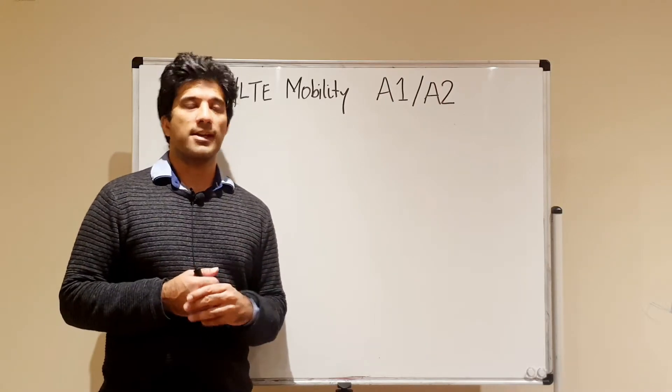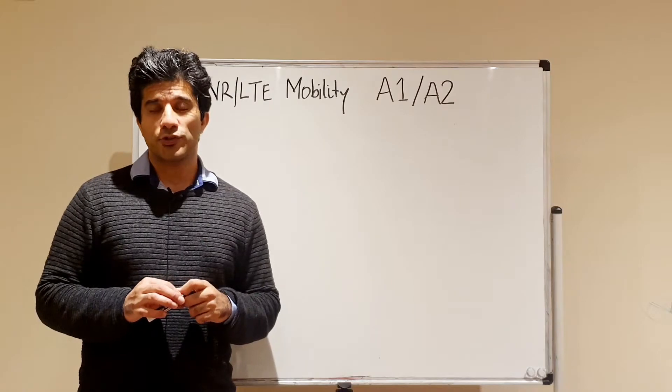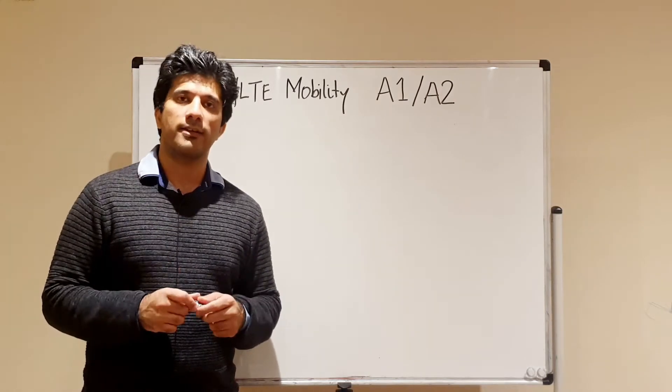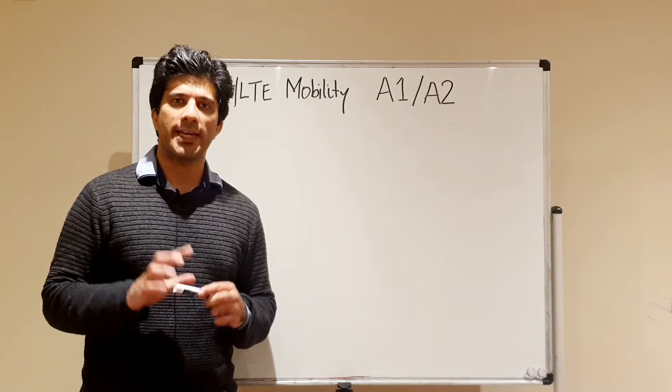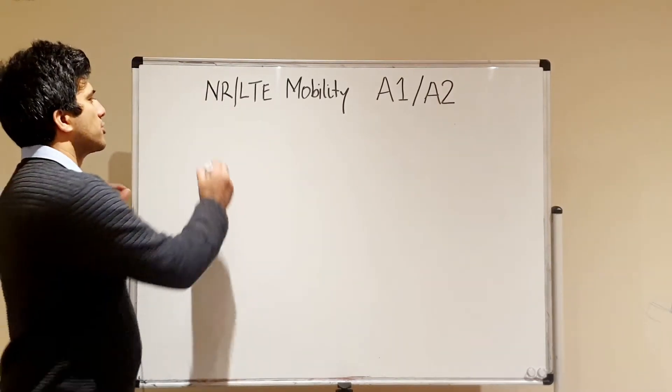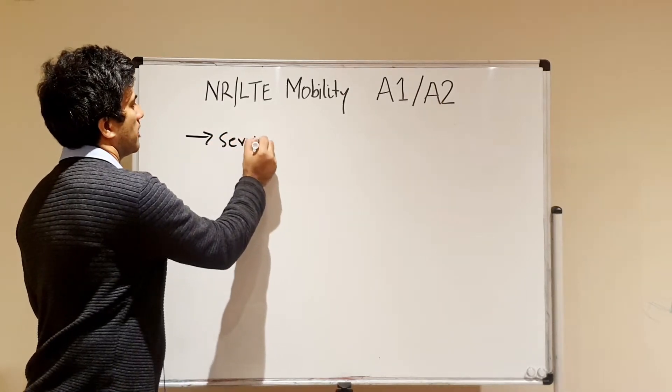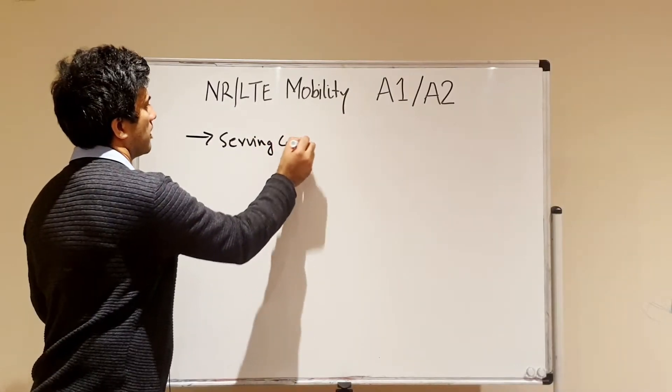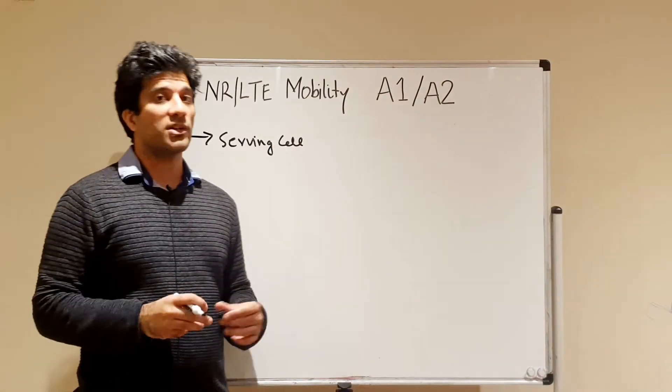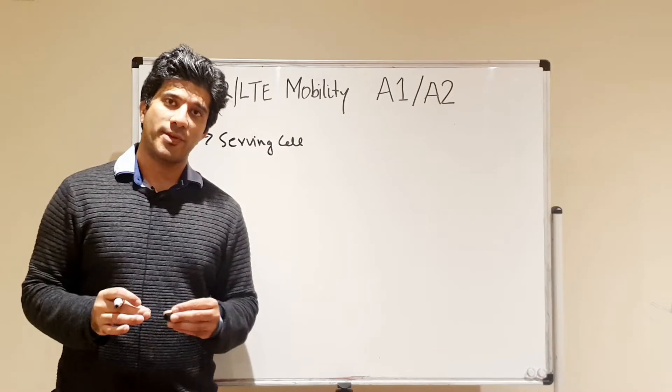So the first two events that I am discussing are A1 and A2. The first thing that should come to your mind when you look at any parameter or anything related to A1 A2 is that this is always related to your serving cell. Whenever you hear the word A1 A2, it means that it has something to do with your serving cell.